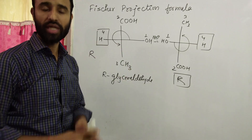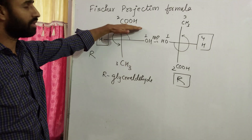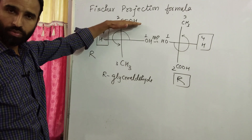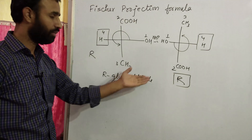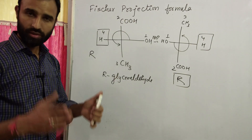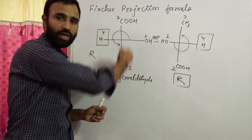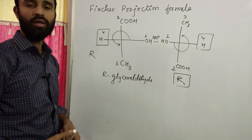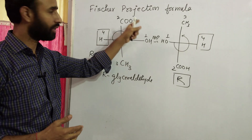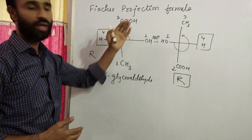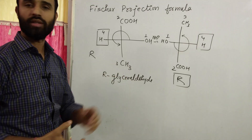Generally, when we draw the Fischer projection formula, the most oxidized carbon should be at the top and the longest carbon chain should be at the bottom. We write more carbon atoms on the vertical line, with the most oxidized carbon at the top and the remaining carbon chain at the bottom.